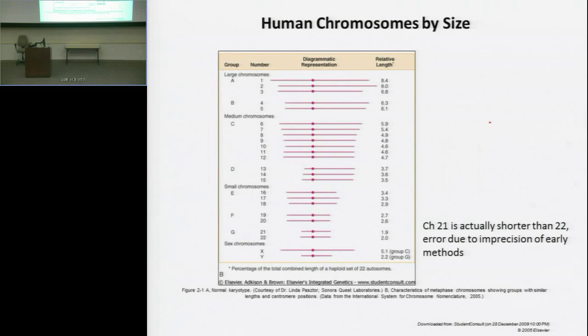So chromosome 21, when you think of trisomy 21 and Down syndrome, remember that that is the smallest chromosome in terms of length.